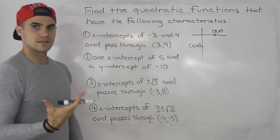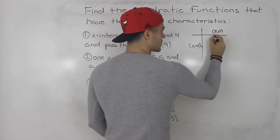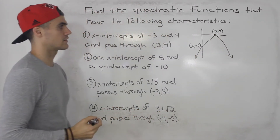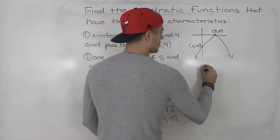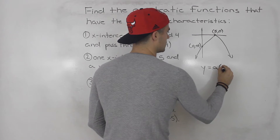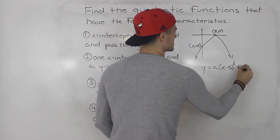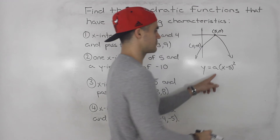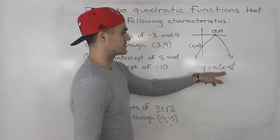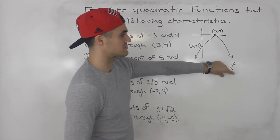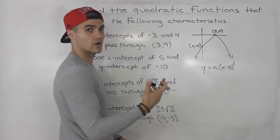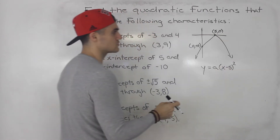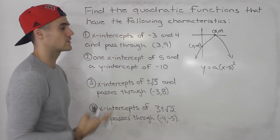If there is one x-intercept for a quadratic, that is always going to be the vertex of the parabola. In vertex form this would be a(x - 5)² + 0, or just a(x - 5)². It's also in factored form because it's (x - 5)(x - 5). Whenever there is one x-intercept, it's always the vertex, and there's always one factor squared rather than two separate factors.